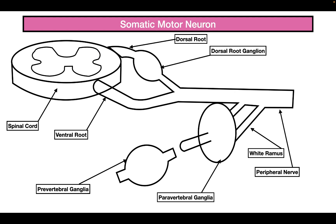Now let's take a look at the somatic motor neuron. The somatic motor neuron cell bodies are going to be found in the ventral horn of the spinal cord, and they project their axons through the ventral root and then into the peripheral nerve.